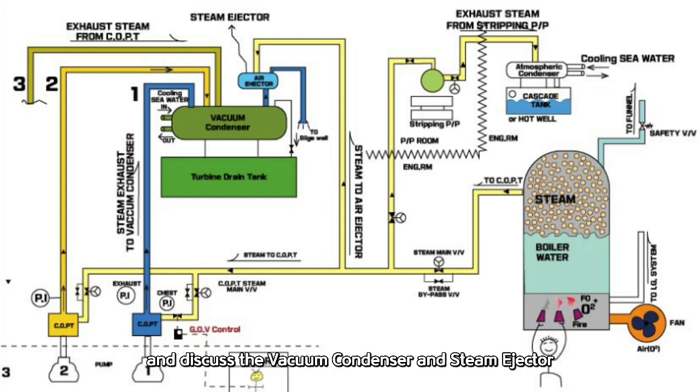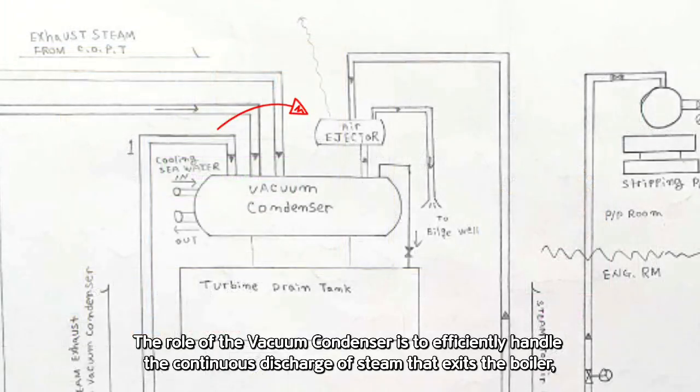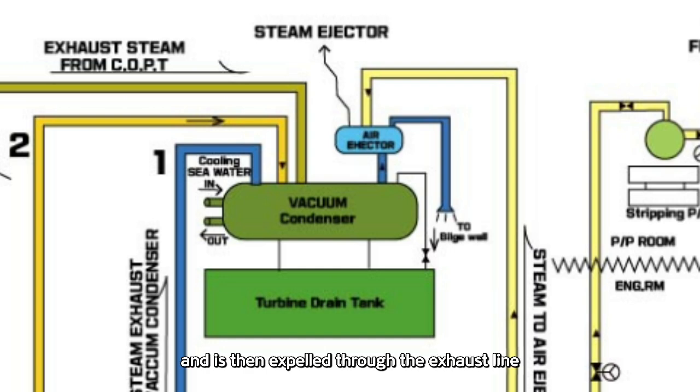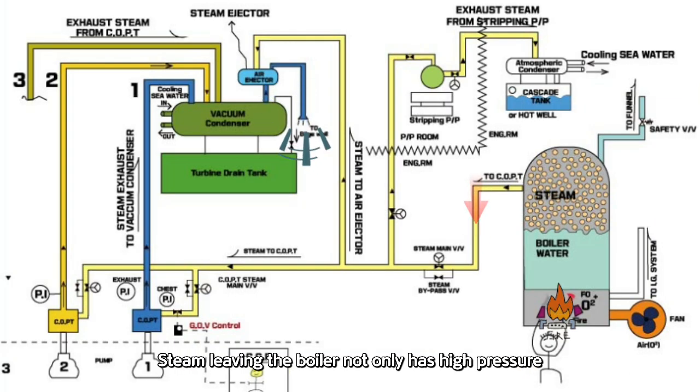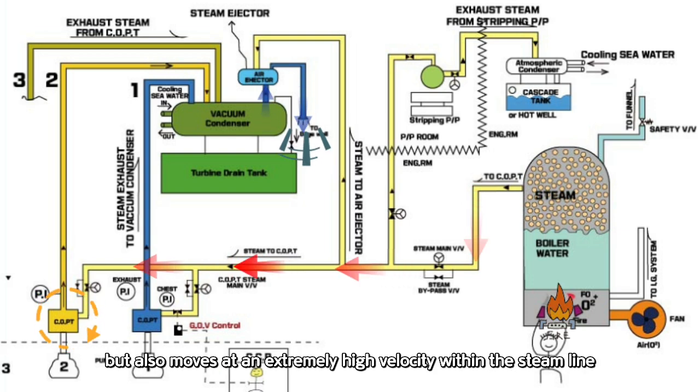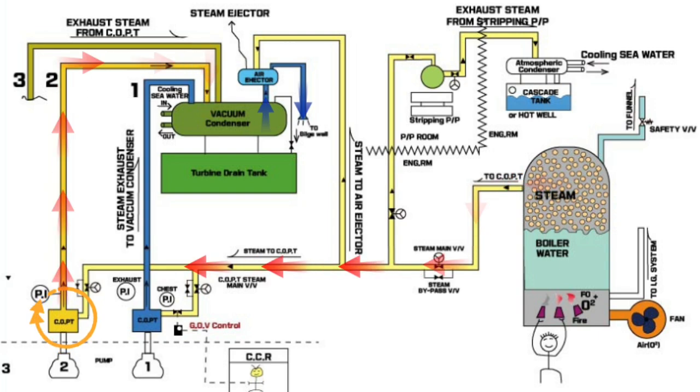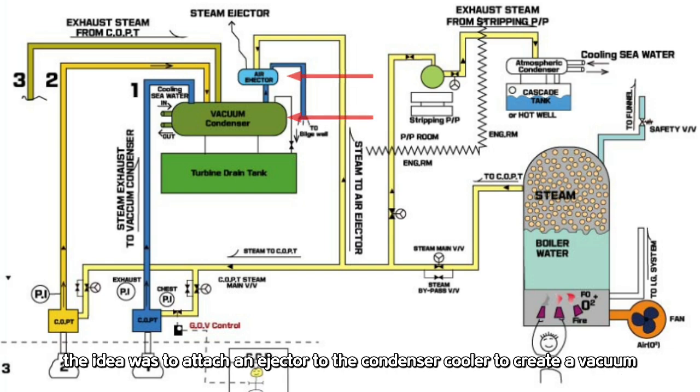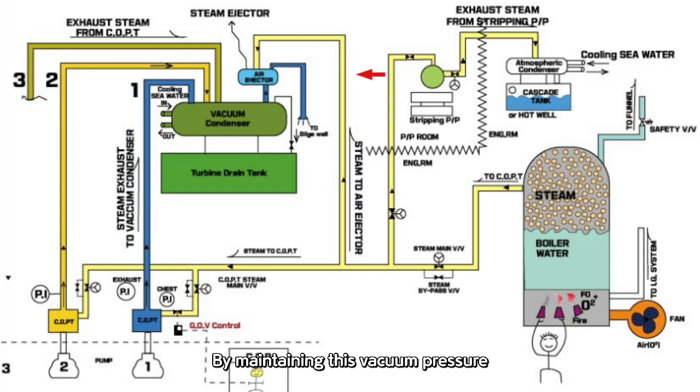Let's get back to the main topic and discuss the vacuum condenser and steam ejector. The role of the vacuum condenser is to efficiently handle the continuous discharge of steam that exits the boiler, circulates through the COPT, and is then expelled through the exhaust line. Steam leaving the boiler not only has high pressure, but also moves at an extremely high velocity within the steam line. To handle this, the idea was to attach an ejector to the condenser cooler to create a vacuum. By maintaining this vacuum pressure, it was expected to improve efficiency. This led to the development and installation of the vacuum condenser.